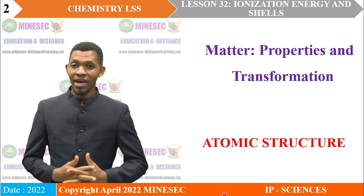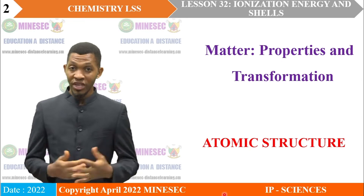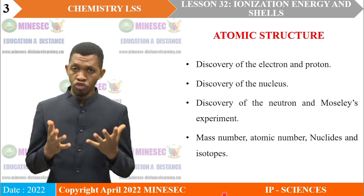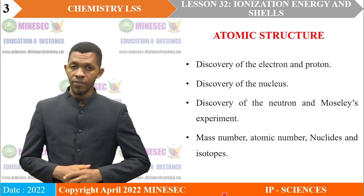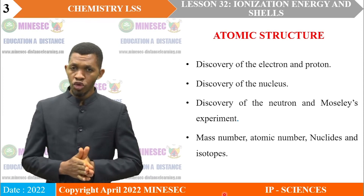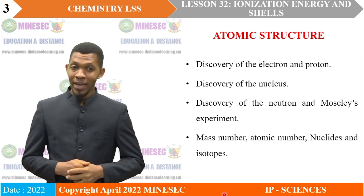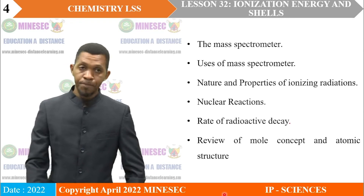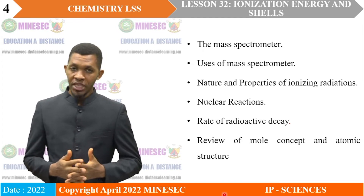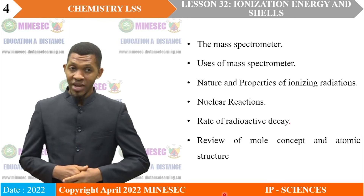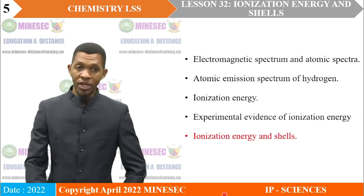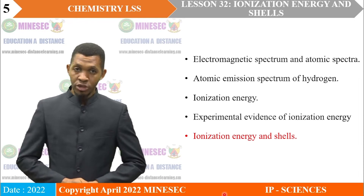We are still on the topic Matter, Properties and Transformation, and we are treating the subtopic Atomic Structure. This subtopic will be treated in the following lessons: discovery of the electron and proton, discovery of the nucleus, discovery of the neutron and Moseley's experiment, mass number, atomic number, nuclides and isotopes, the mass spectrometer, uses of the mass spectrometer, nature and properties of ionizing radiations, nuclear reactions, rate of radioactive decay, review of more concepts, and atomic structure — electromagnetic spectrum and atomic spectra.